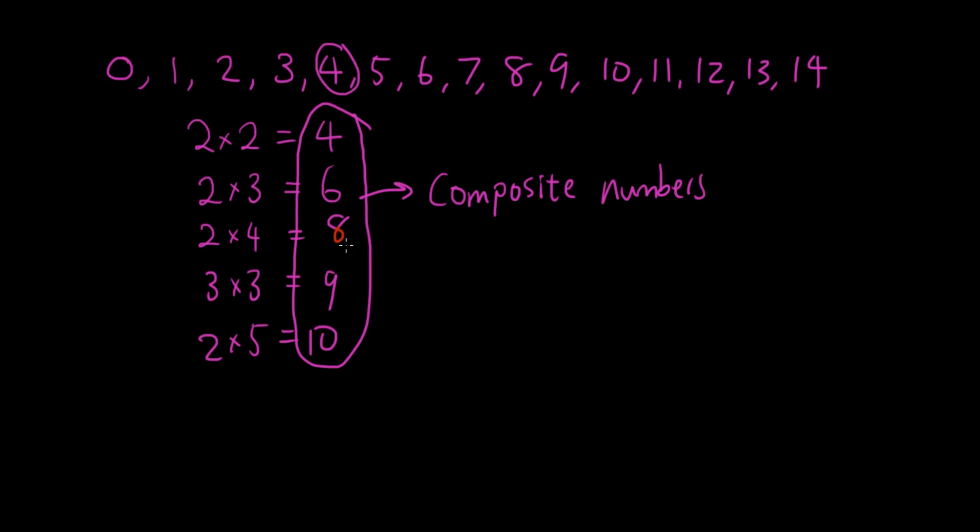Now if a number is a composite number, it is not a prime number. So any of these numbers that you can use smaller numbers to multiply each other to get the bigger number, it's not a prime number.